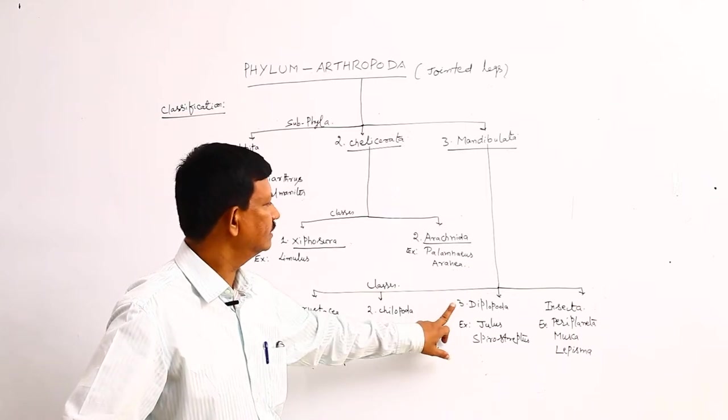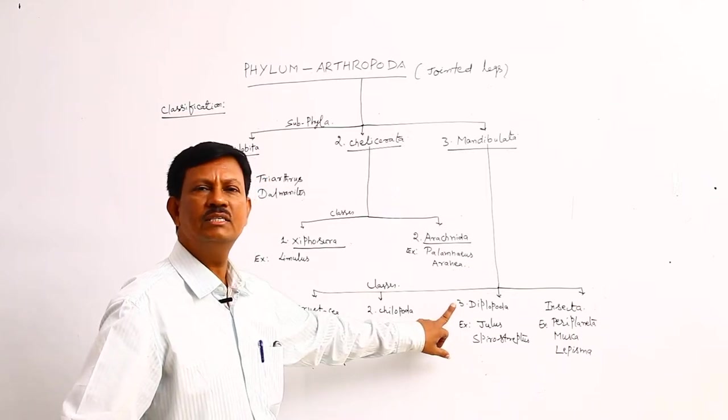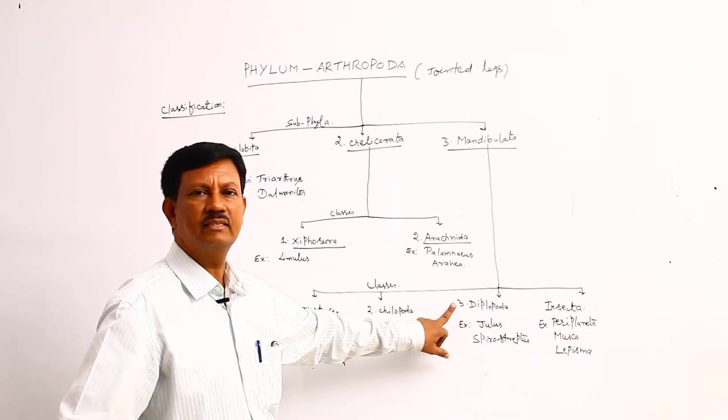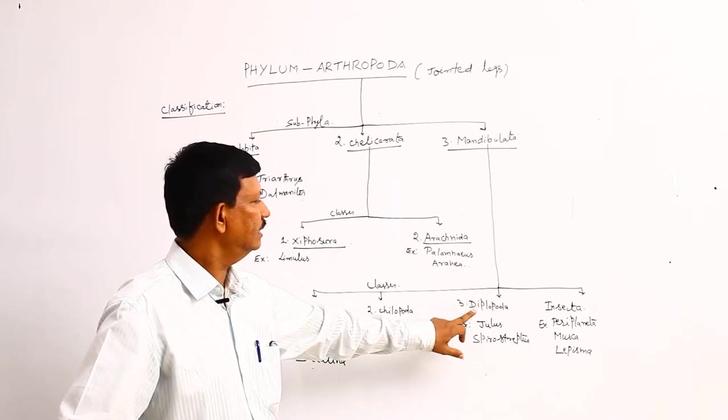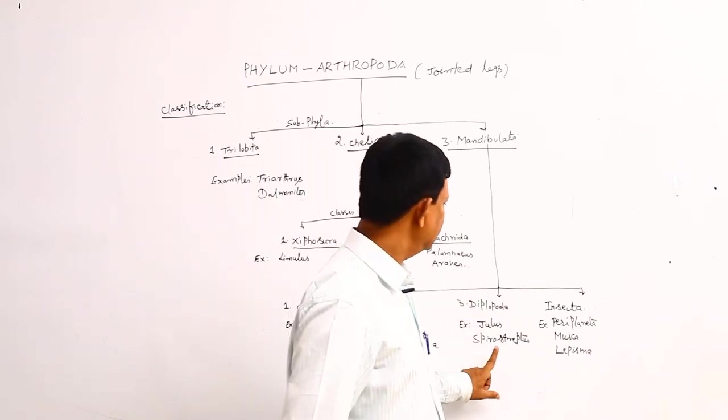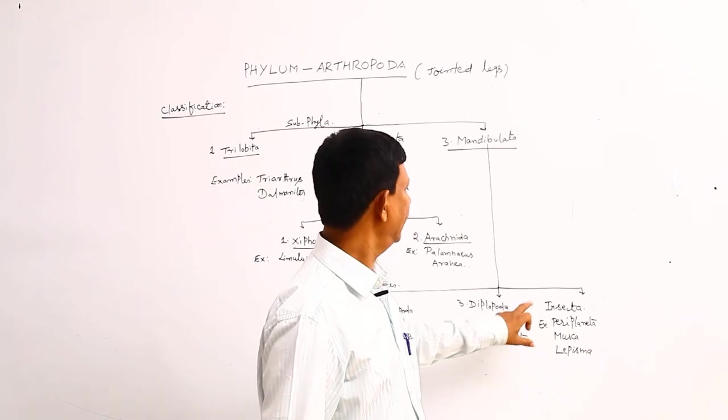Third class is the Diplopoda. Here large number of legs are present, thousands of legs are present. Hence they are known as the Diplopoda. Example is the Julius and Spiroceptus.